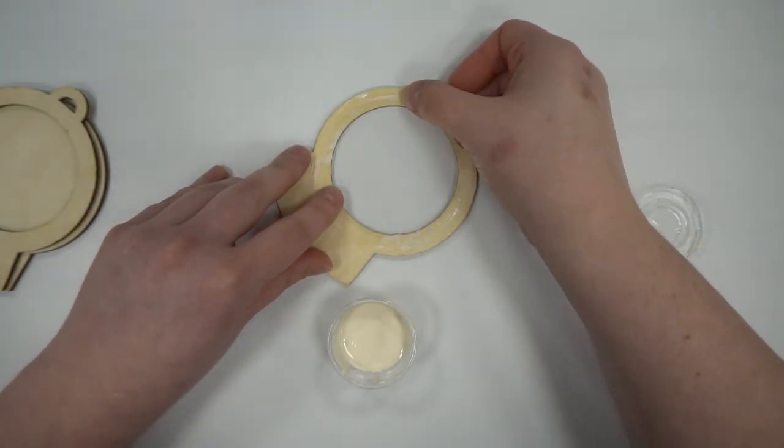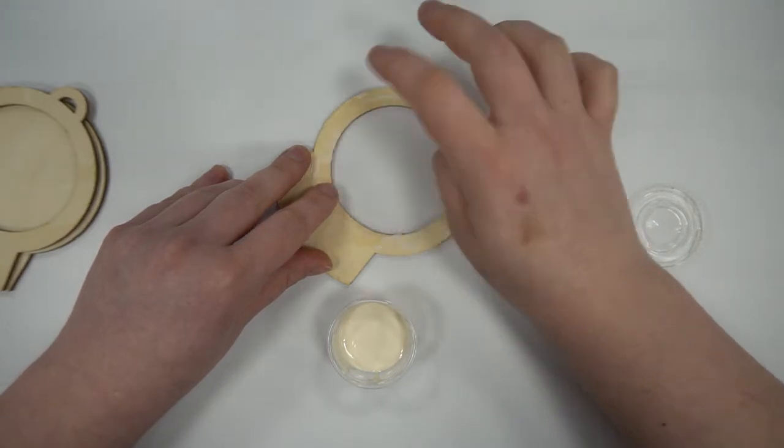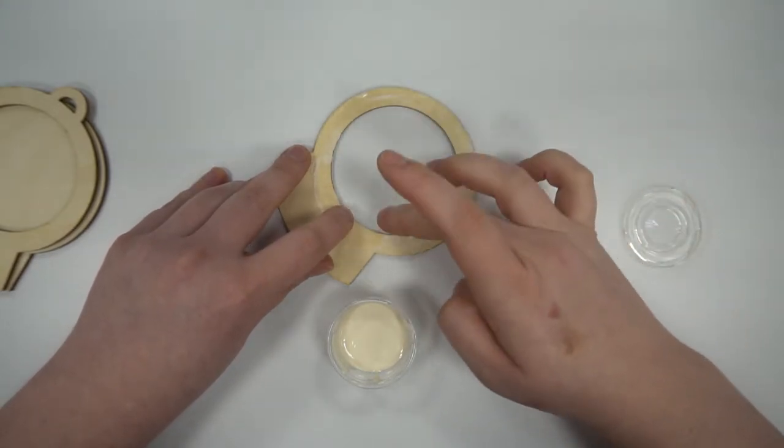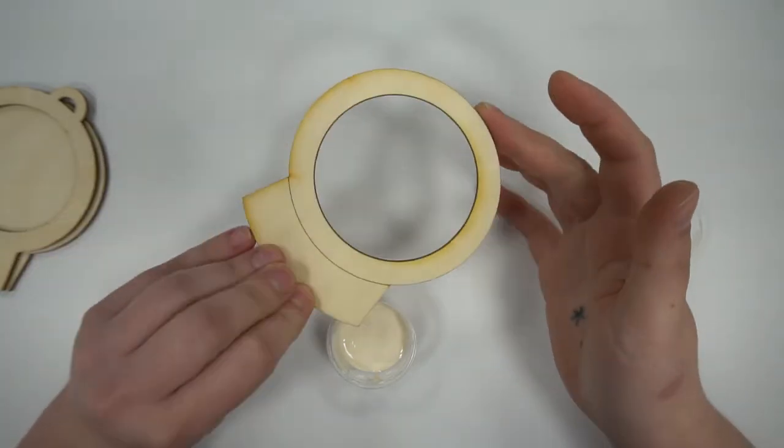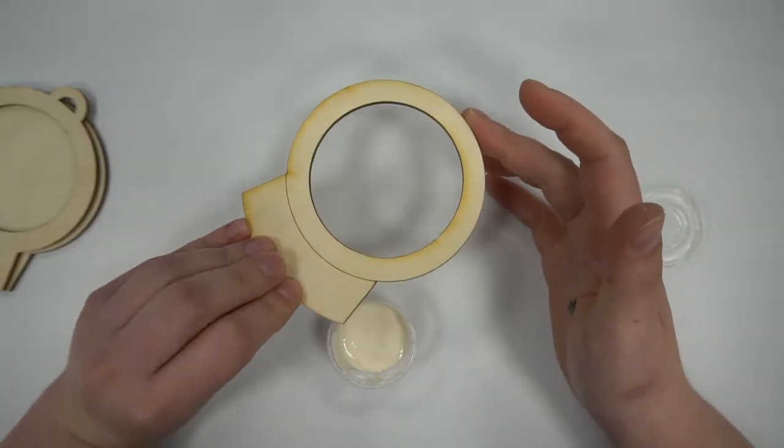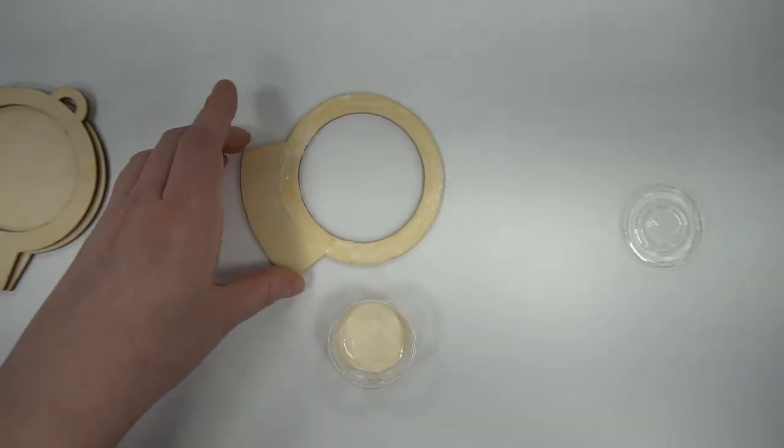And then we're just going to gently place our acetate. Try and get it as flat as you can all the way around and kind of just lightly tap the glue into it. Again, you want to wipe away any excess glue here while the glue is still wet because it's kind of a pain to get off when it sits dry.